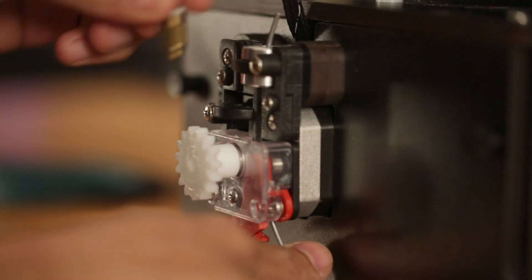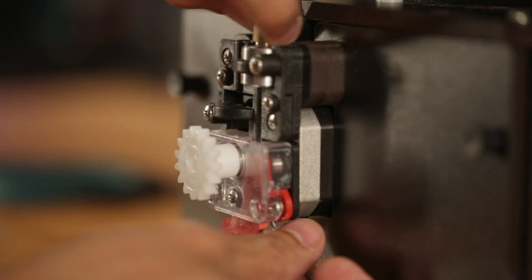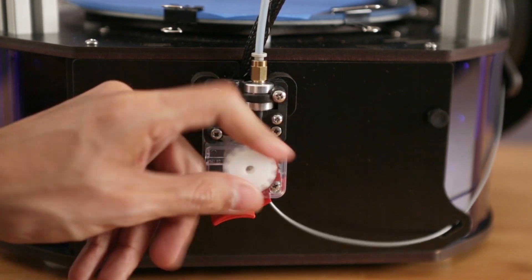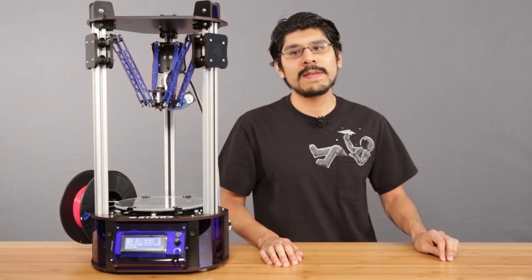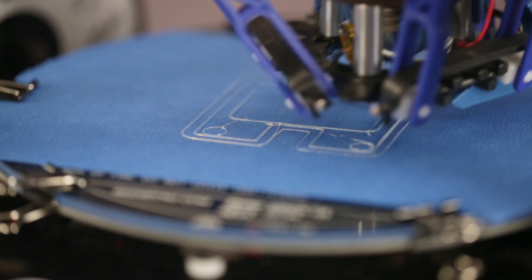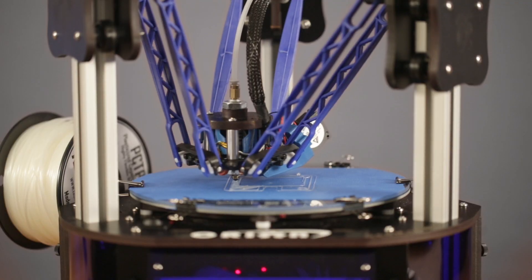This is a Bowden drive system which means the filament loader is separate from the nozzle. This allows for fast printing speeds and acceleration but it kind of limits using TPE filament like NinjaFlex. It seems to print pretty well with PCTPE flexible nylon and even at slow speeds semi flex from NinjaFlex seems to work pretty well.